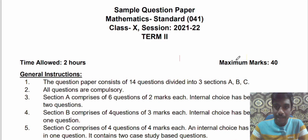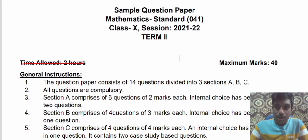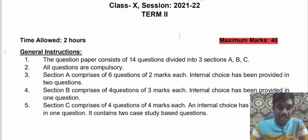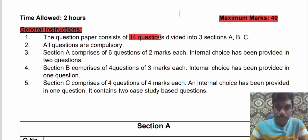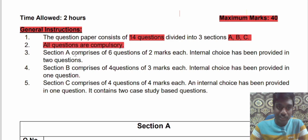Here you can see the time allotted is 2 hours and the maximum marks allotted is 40 marks. So 40 marks for 2 hours. The question paper consists of 14 questions and these 14 questions have been divided into 3 sections — A, B, and C. All the questions are compulsory, whereas section-wise a few questions have the internal choice.